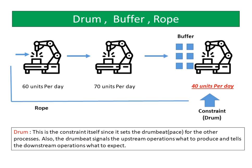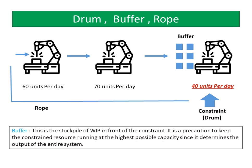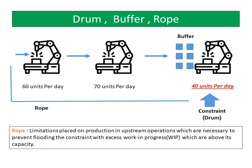The drumbeat signals the upstream operations what to produce and tells the downstream operations what to expect. Buffer is the stockpile of WIP in front of the constraint — a precaution to keep the constrained resource running at the highest possible capacity, since it determines the output of the entire system. Rope is the limitation placed on production in upstream operations, necessary to prevent flooding the constraint with excess WIP above its capacity. The rope is a signal generated by the constraint indicating that some inventory has been consumed, which triggers an identically sized release of inventory into the process. The role of the rope is to maintain throughput without creating an accumulation of excess inventory.